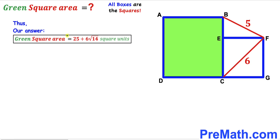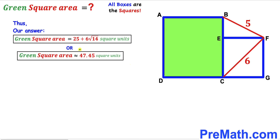So the area of this green shaded square turns out to be 25 + 6√14 square units, which is approximately equal to 47.45 square units. That's our final answer. Thanks for watching and please don't forget to subscribe to my channel for more exciting videos.